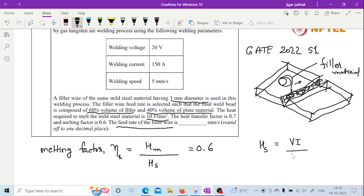So if you write like this, area into velocity into heat. So if you write like that, power is also given. So you need to check the unit. It is 0.7, which is the heat transfer factor. The one thing you need to consider is this heat transfer factor.